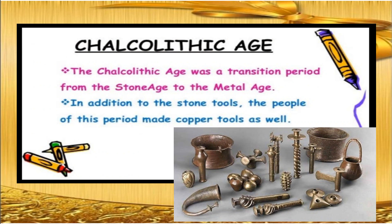Next is the Chalcolithic Age. In the Chalcolithic Age, tools were made of copper — not only copper, but copper along with stone. The largest copper hoard was discovered in Gangaria, located in Madhya Pradesh. You can see some tools that were used in the Chalcolithic Age, like shells, swords, harpoons, spearheads, etc.